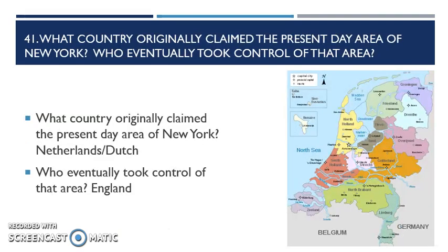Question 41: what country originally claimed the present-day area of New York, and who eventually took control? The country that originally claimed New York is the Netherlands, or the Dutch. A lot of people are confused — the Netherlands is made up of states, kind of like the United States of America has 50 states that make up the United States.